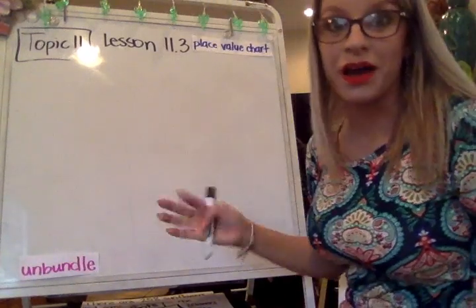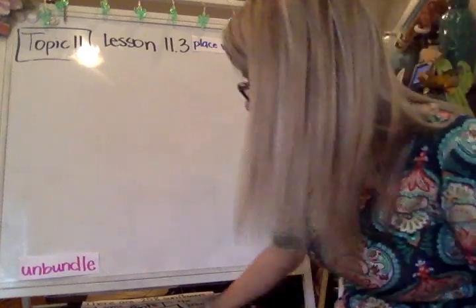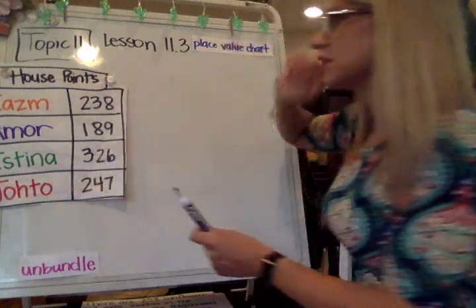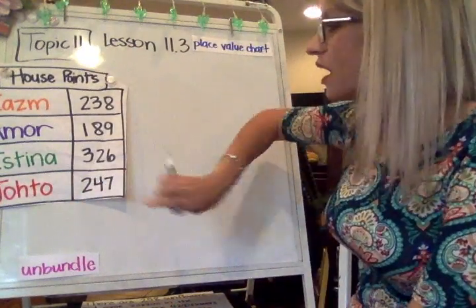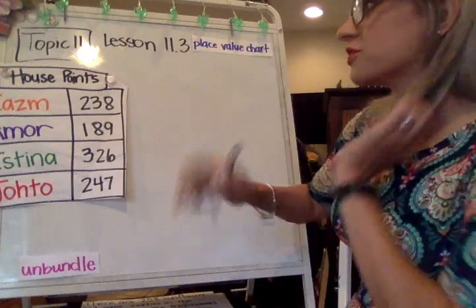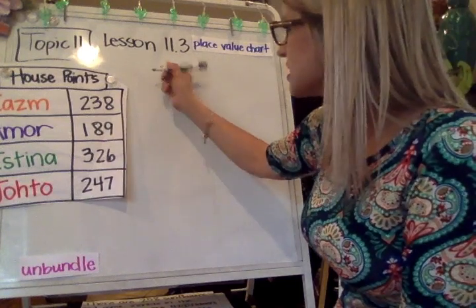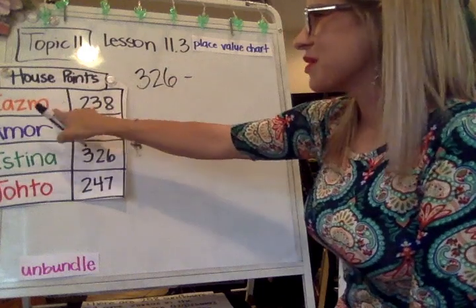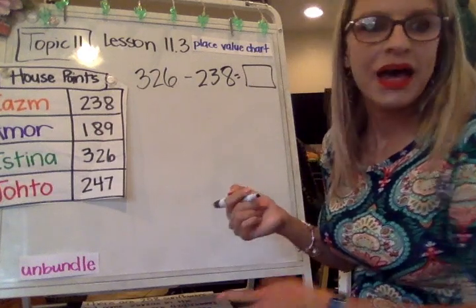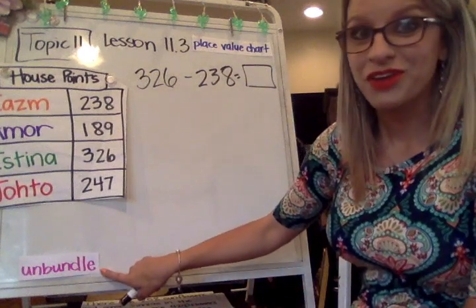All right. So back to our unbundling and our using the place value chart to solve some equations. I did want to bring back a chart where you have to gather some information. I think that this is really important, especially when being able to get ready for third grade. I wanted to have you find the difference between Istina and Ezom and their house points. So first you would have to create your equation. So how many more points does Istina have than Ezom? So I'm going to start with Istina 326 and I'm going to subtract how many points that Ezom has.